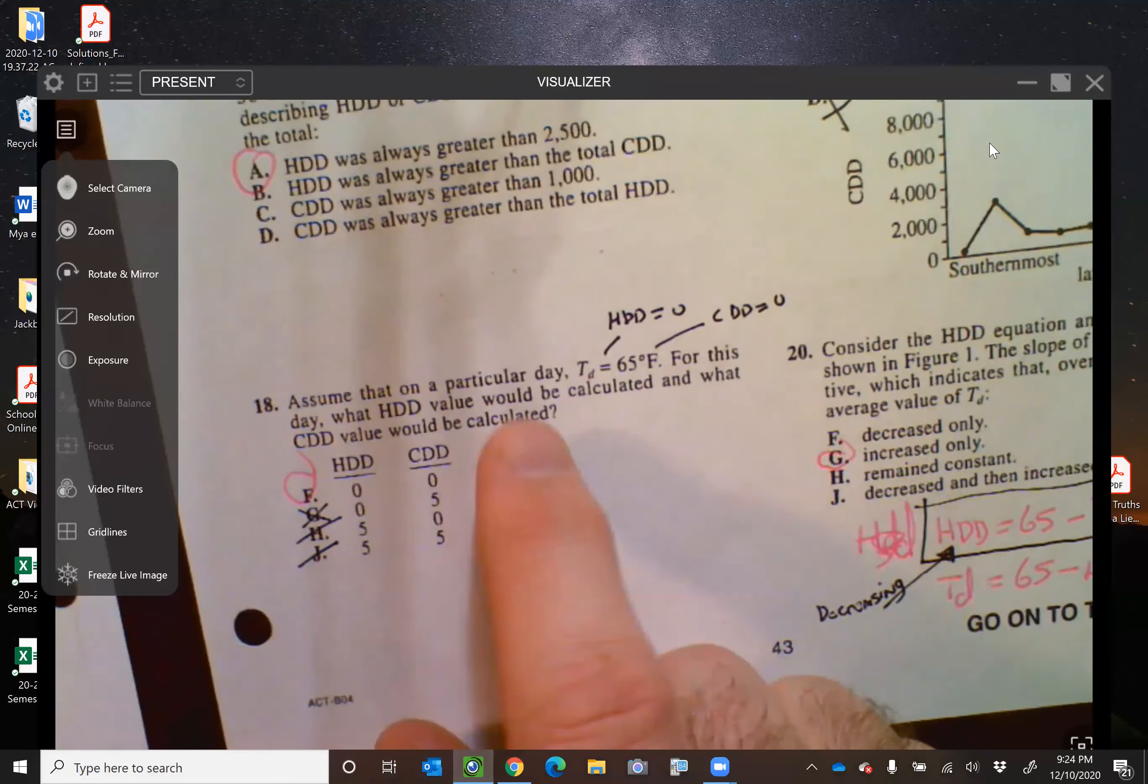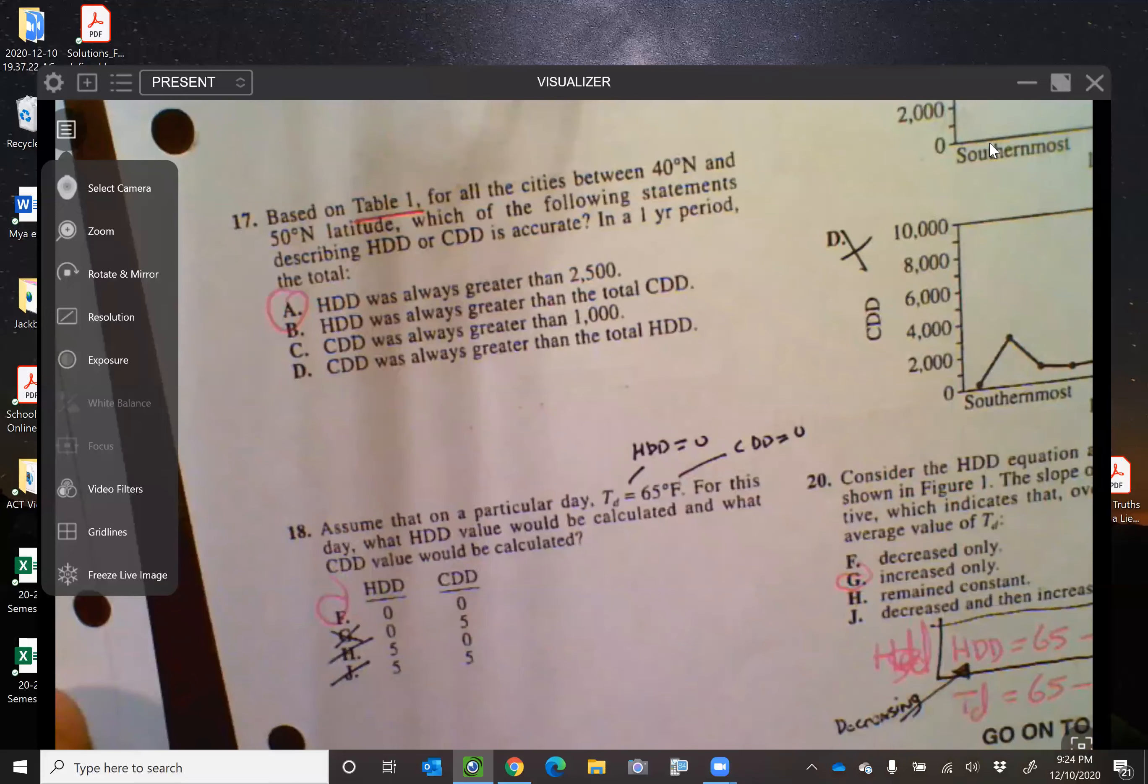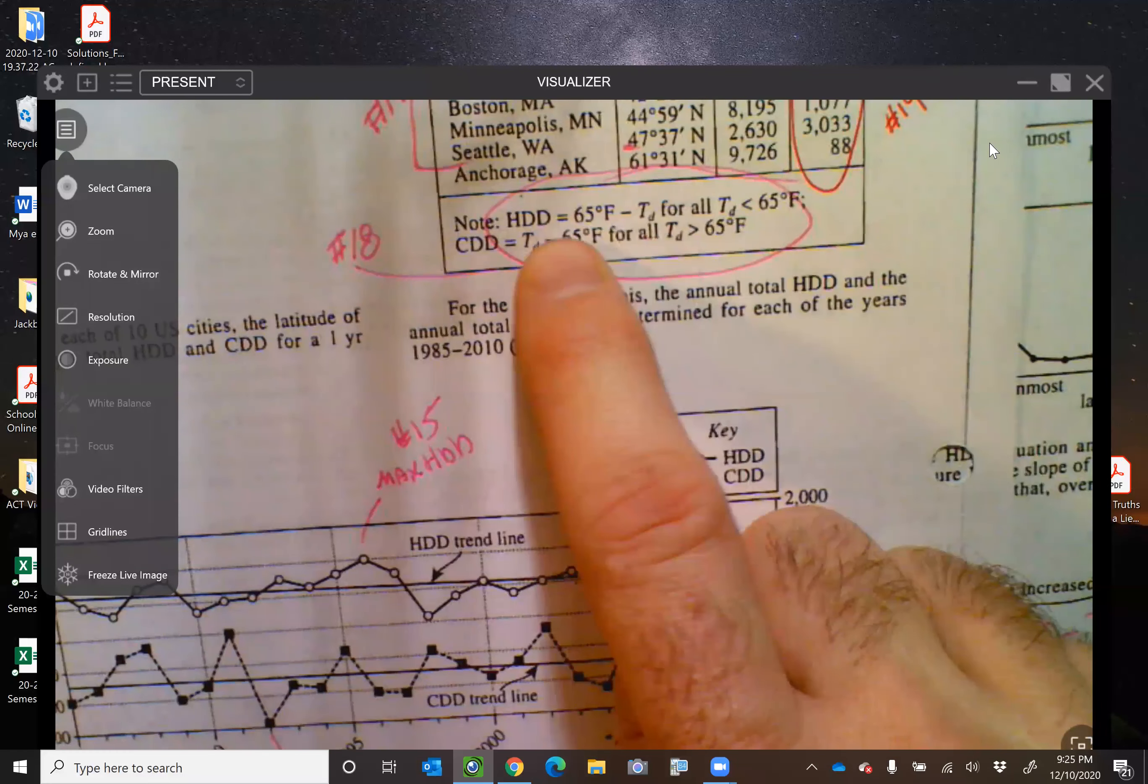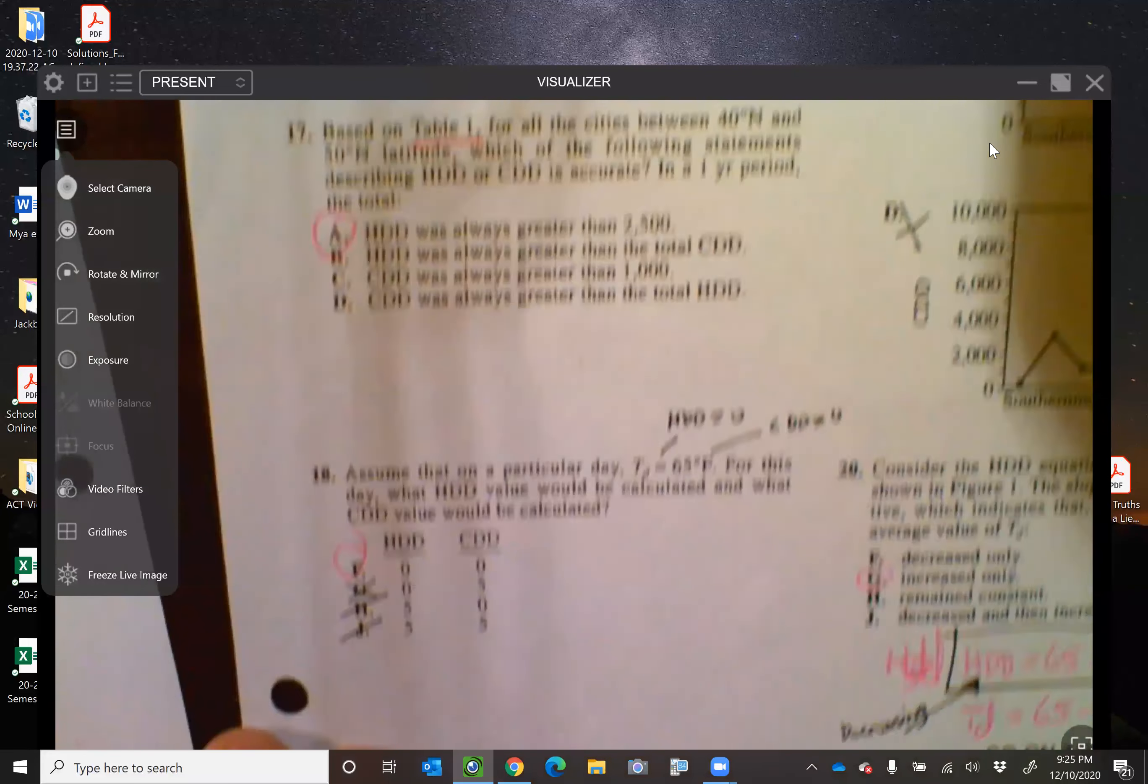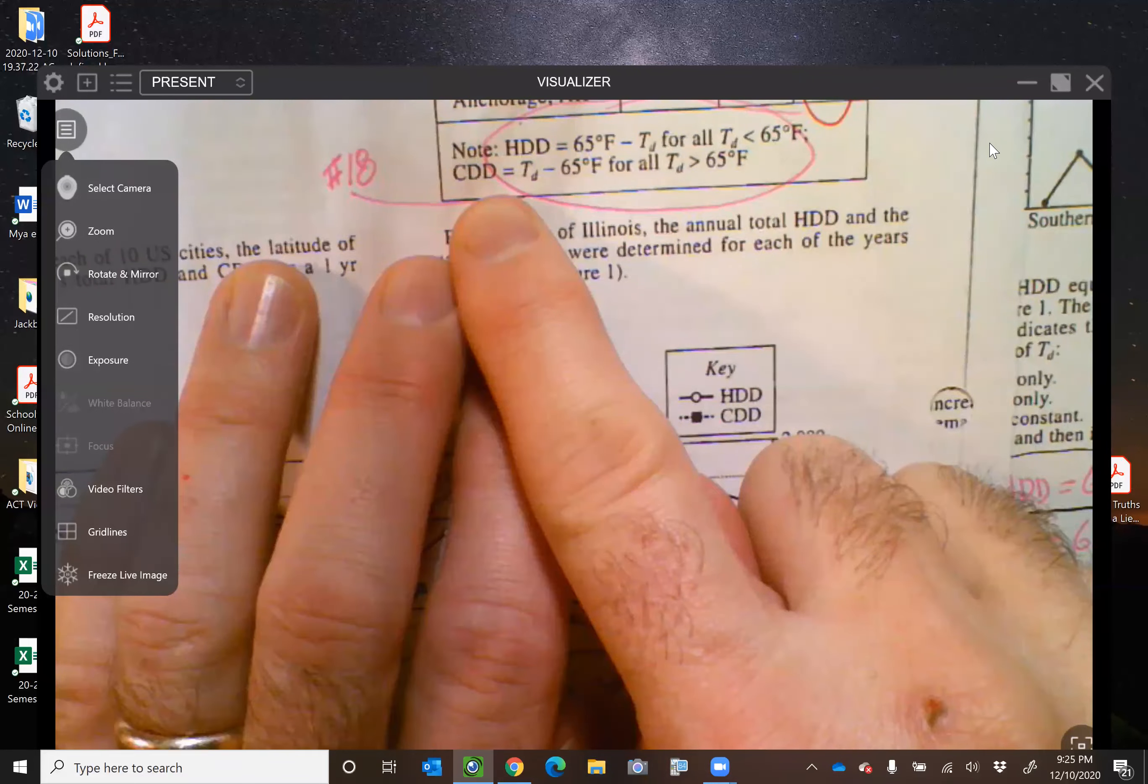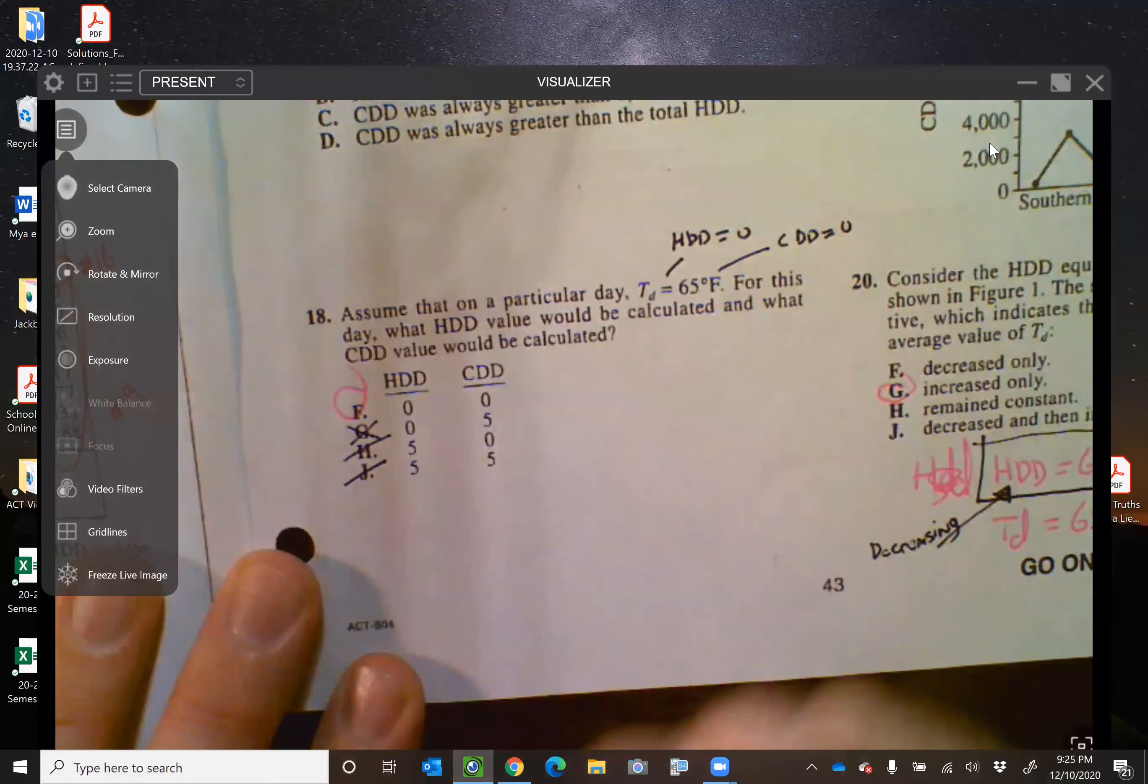Now, for me, 18 was the stinker question in here. Assume on a particular day, TD equals 65 degrees Fahrenheit. What would be the values of HDD and CDD? Took me a while to figure it out until I finally saw the formula right here. I'm not sure about anyone else, but I was really looking in the chart here. I was looking in the graph, couldn't find it. Finally, I see it right here. Oh, HDD is 65 minus TD. Well, the temperature is 65. Well, then 65 minus 65 is zero. So the HDD is zero. So I get rid of H and J. And then it tells me that the CDD is whatever that temperature is, minus 65. Well, that's going to be 65 minus 65, which would be zero. So it's letter F. I was searching a lot trying to find that one.